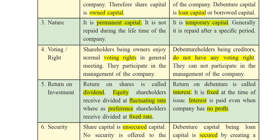The third point is nature. A share is permanent capital — it is not repaid during the lifetime of the company. It remains for a longer period of time in the company until the company winds up or is liquidated. Until the company is closed, the share capital remains within the company, which is why it is permanent capital. On the other hand, a debenture is temporary capital and is generally repaid after a specific period, because it is a debt — a loan — and so it has to be repaid.